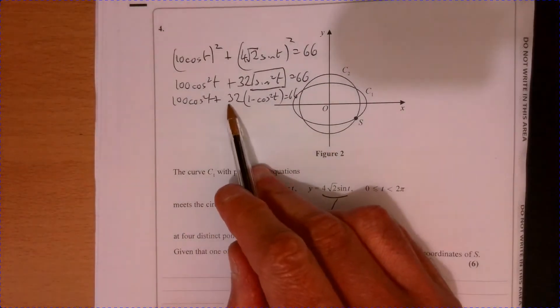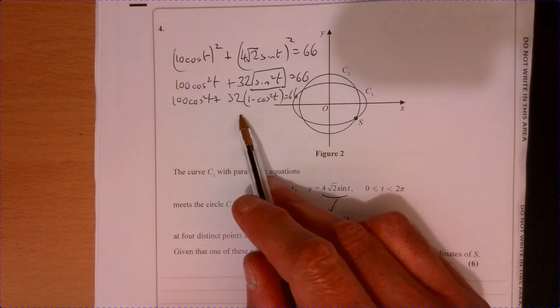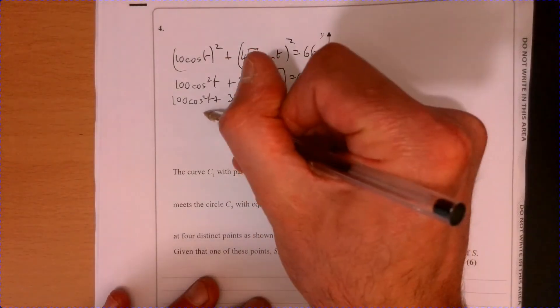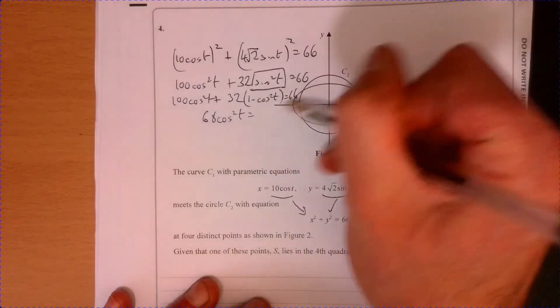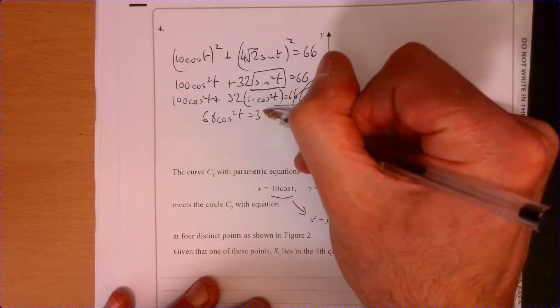Right. If we multiply this up and just tidy it up, we're going to get 68 cos squared T, 30, 34.